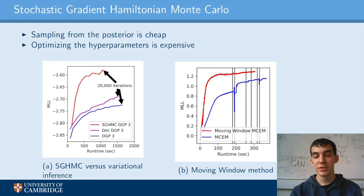For optimizing the hyperparameters, we suggest a further improvement: moving window MCM, that recycles recent posterior samples, which further speeds up convergence, as shown on figure B.